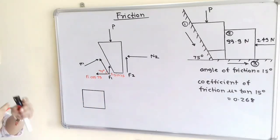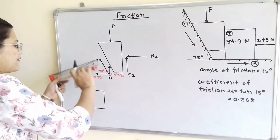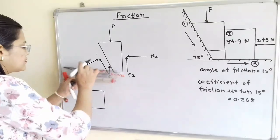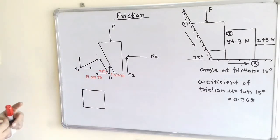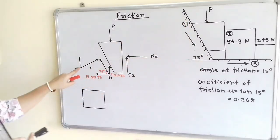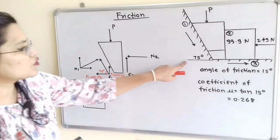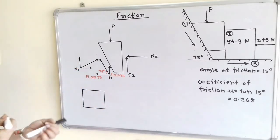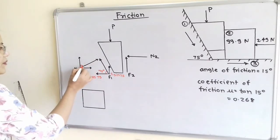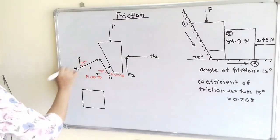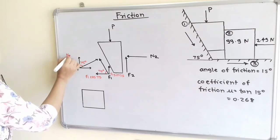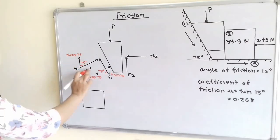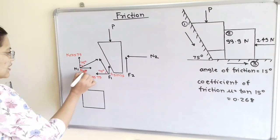Now we will resolve N1 into two components — horizontal and vertical. N1 is perpendicular to the inclined surface, and since the inclined surface makes 75 degrees with horizontal, the point of intersection of the two perpendicular lines also makes the same angle of 75 degrees. So the vertical component is N1 cos 75 (near the angle) and the horizontal component is N1 sin 75 (away from the angle).